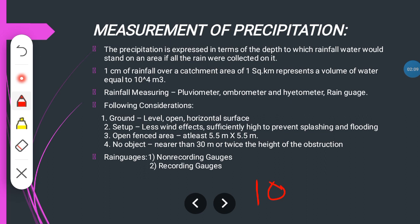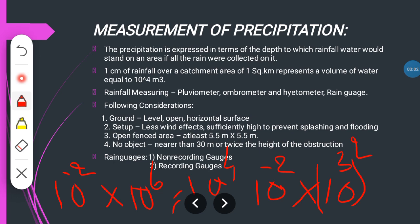1 centimeter is 10 to the power of minus 2 meters. 1 square kilometer converted to square meters is 10 to the power of 6. So 10 to the power minus 2 multiplied by 10 to the power 6 equals 10 to the power 4 cubic meters.